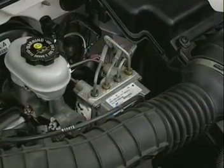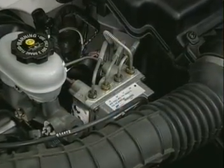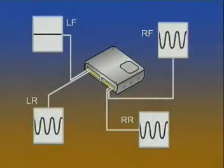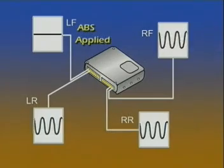On a four-channel ABS system, a separate ABS channel controls each wheel. If a wheel sensor signal indicates a lock-up condition of any one wheel, the ABS control unit only initiates the isolate, hold, dump routine for that channel. The other three wheels continue to brake without ABS.